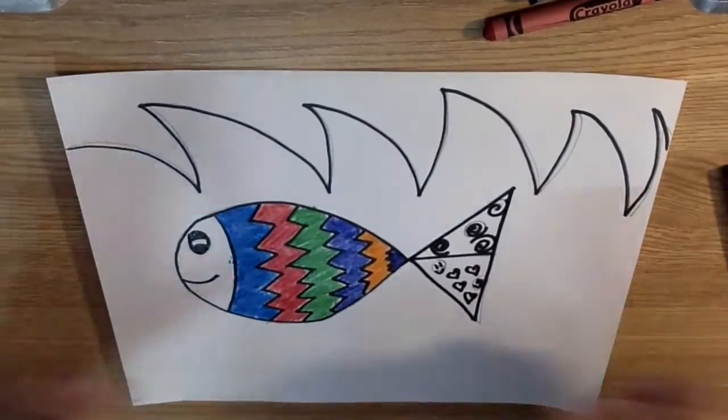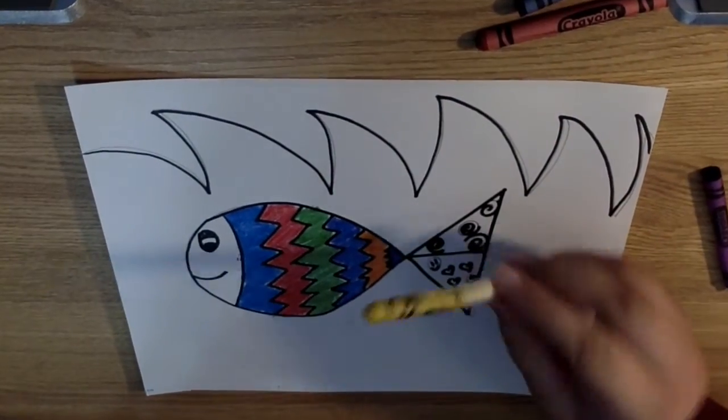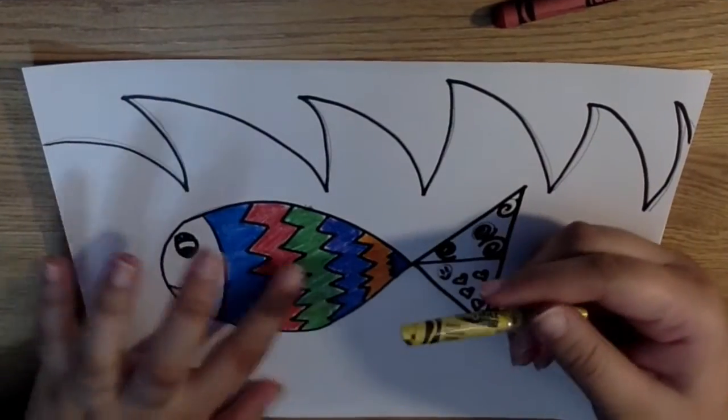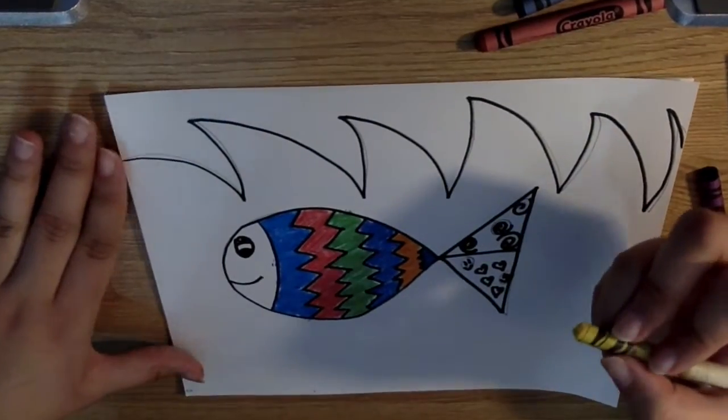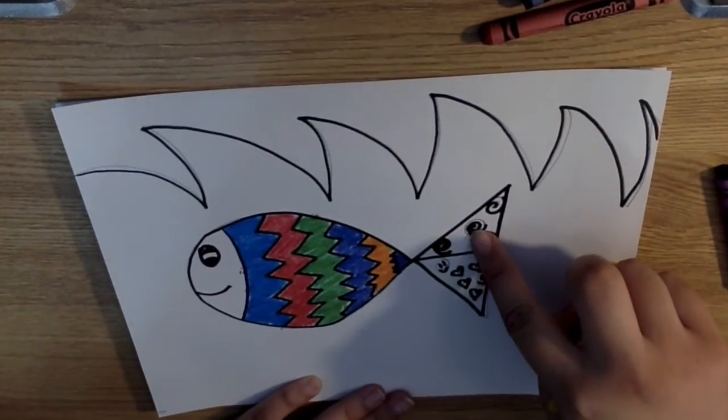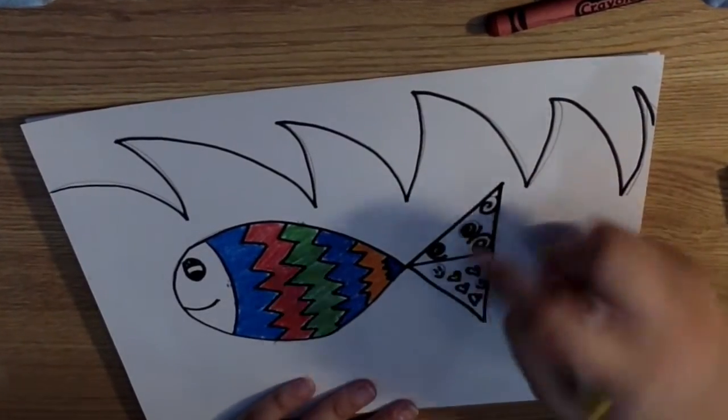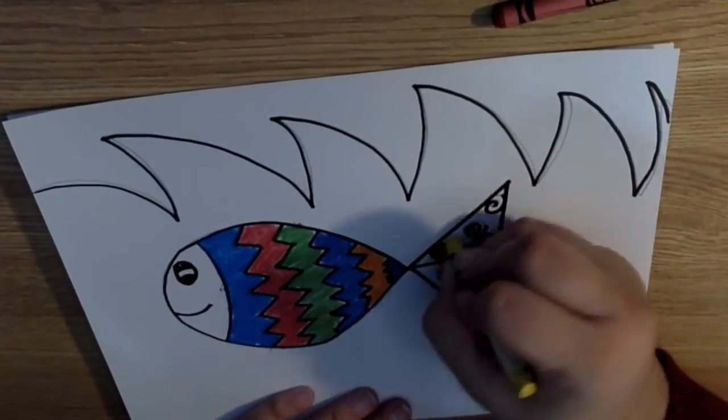So I didn't get to use my yellow color on my fish body, so I'll use it on my fish tail. So I'll color it where my swirlies are at. That will be yellow.